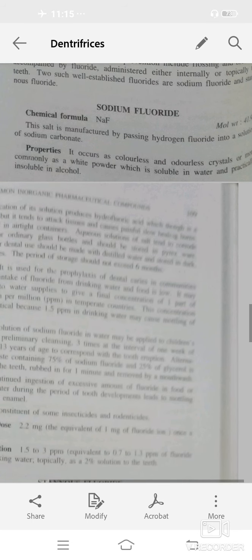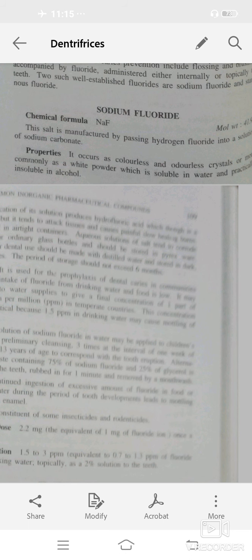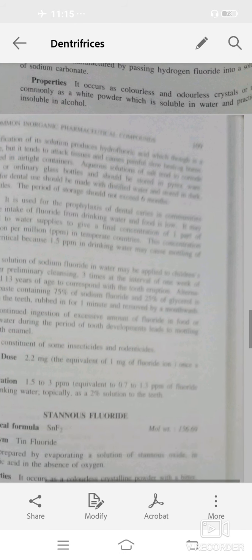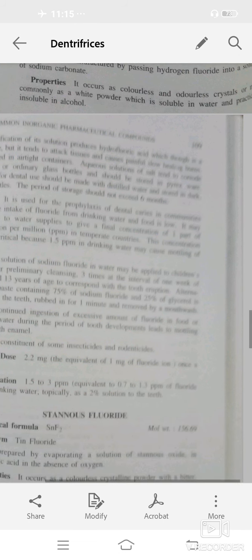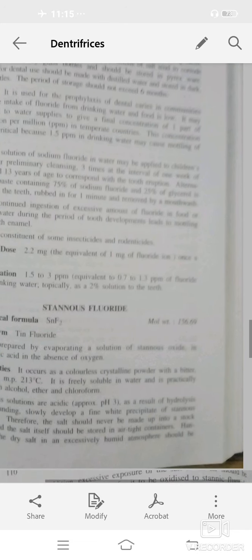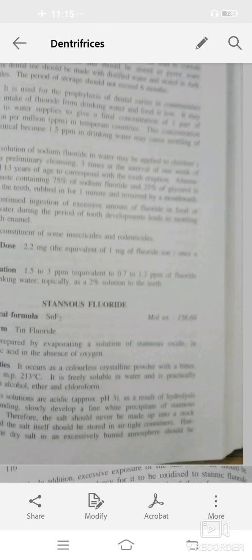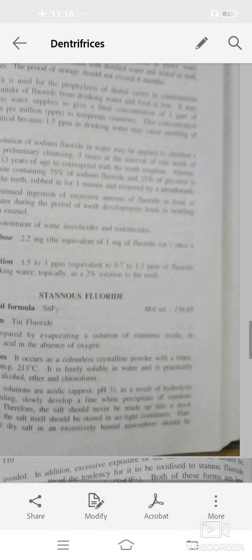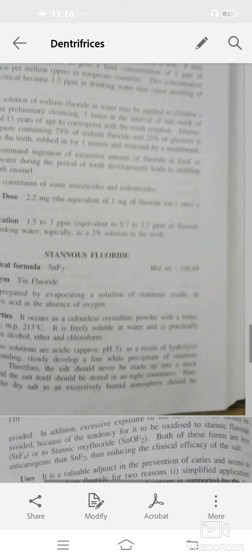When intake of fluoride from drinking water and food is low, it can act as a source of fluoride. A 2% solution of sodium fluoride in water may be applied to children's teeth after preliminary cleansing three times at an interval of one week. It's also a constituent of insecticide or rodenticide. Usual dose is 2.2 mg. Next, stannous fluoride SnF2, tin fluoride. Properties: it's a colorless crystalline powder with bitter taste, freely soluble in water, insoluble in alcohol and chloroform.